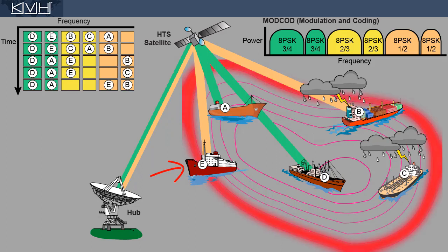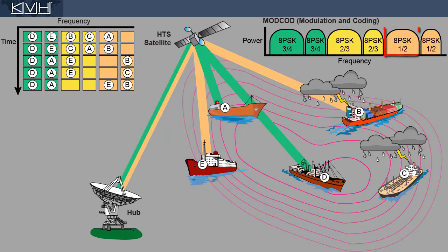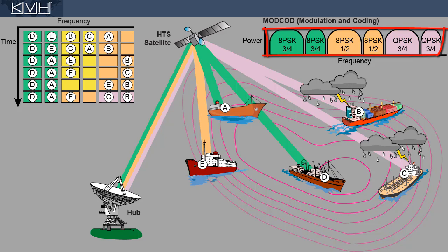Now vessel E is approaching the edge of the beam, where the signal is weakest. It also hops to a lower in-route. As conditions start to worsen for a wider population of vessels, the hub can modify the composition of the in-route group to better accommodate them, maximizing the network's capacity.